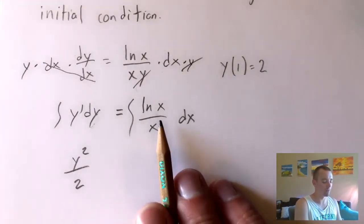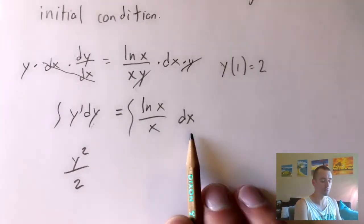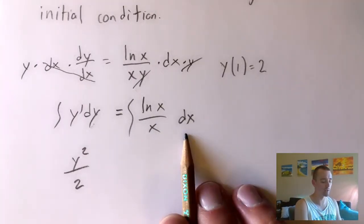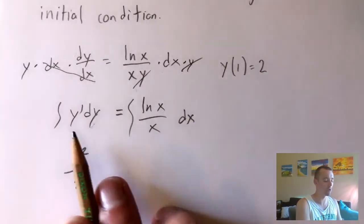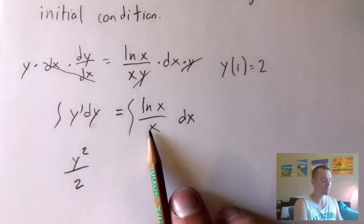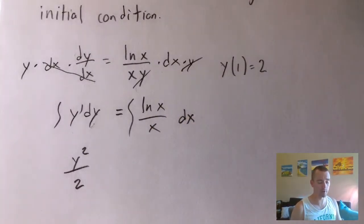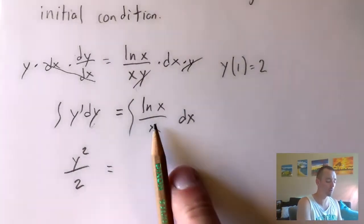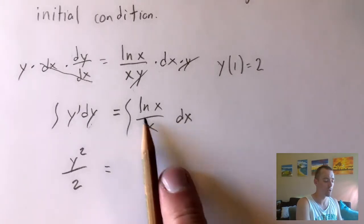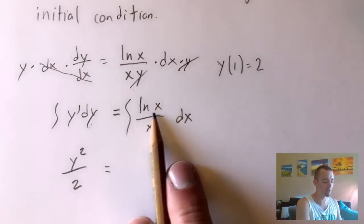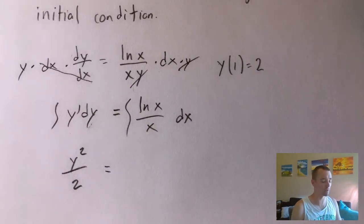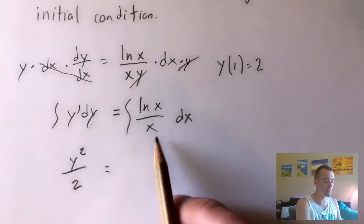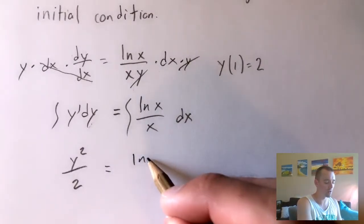To integrate the right side — natural log of x over x with respect to x — I'm not going to show all the steps here, but you can integrate that using u-substitution. If you want to see how to do that, I have a video on it you can click on at the top of your screen. We let u equal natural log of x, work through the steps in that video, and what that tells us is that the integral comes out to natural log of x all squared over 2.